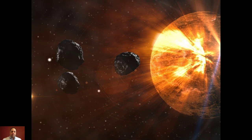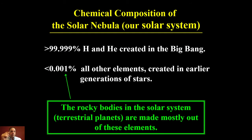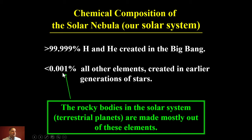So what is the chondritic composition, or rather, what is the original solar composition? The solar nebula is, as I mentioned previously, 99.999% hydrogen and helium — that was created in the Big Bang — and then 0.001% of other elements made in earlier generations of stars. And it's that 0.001% that the Earth is made up of.